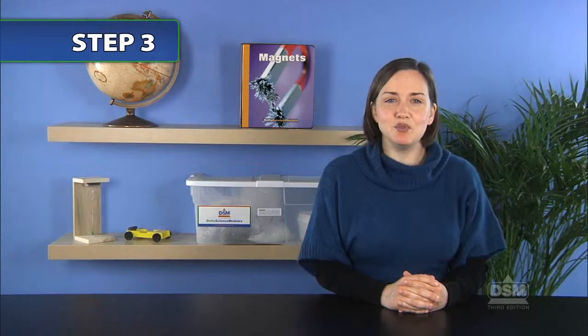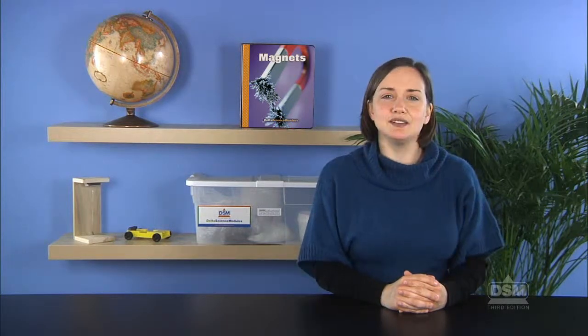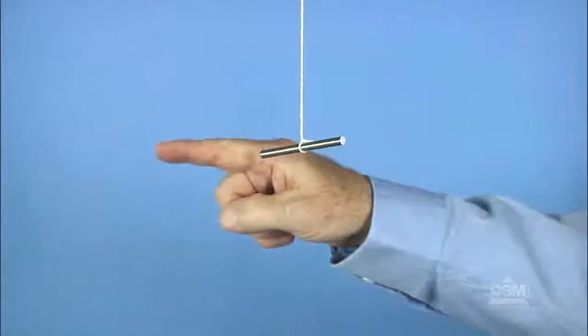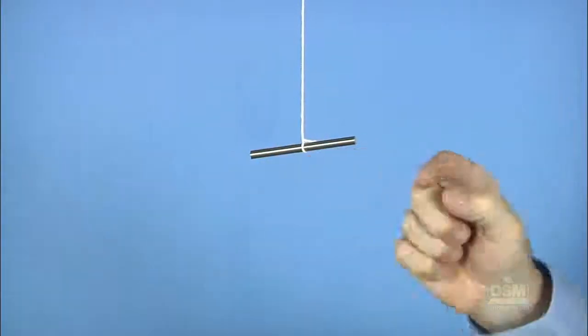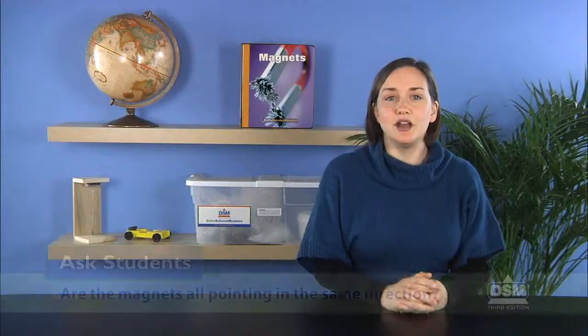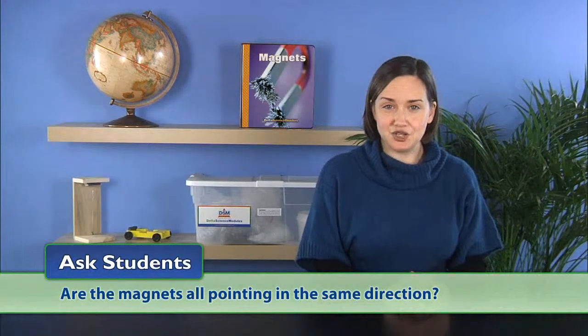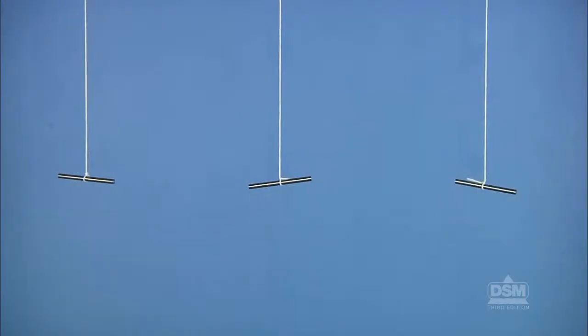Next, have one member of each team stand next to his or her magnet and, using both hands, point in the same directions in which the ends of the magnet are pointing. Ask students, are the magnets all pointing in the same direction? Students will be surprised to see that their classmates and the magnets are all pointing in the same direction.